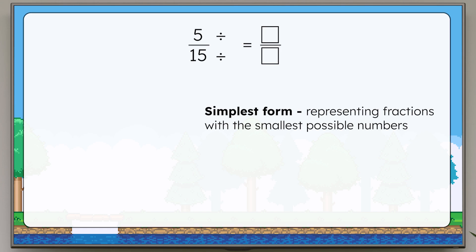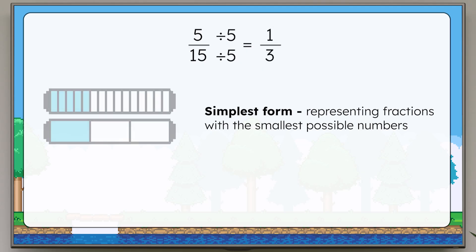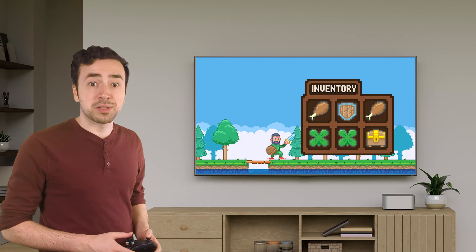Yes. Five and fifteen are both divisible by five. Five divided by five equals one, and fifteen divided by five equals three. So in simplest form, we have one-third of the shield boost left. Perfect. Let's keep combining items to make more room.